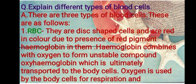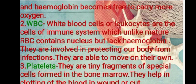Next question: explain the different types of blood cells. There are three types of blood cells. Red blood cells (RBC) are disc-shaped and red in color due to the presence of the red pigment hemoglobin. Hemoglobin combines with oxygen to form an unstable compound, oxy-hemoglobin, which is transported to the body cells. Oxygen is used up by the body cells for respiration, and hemoglobin becomes free to carry more oxygen.